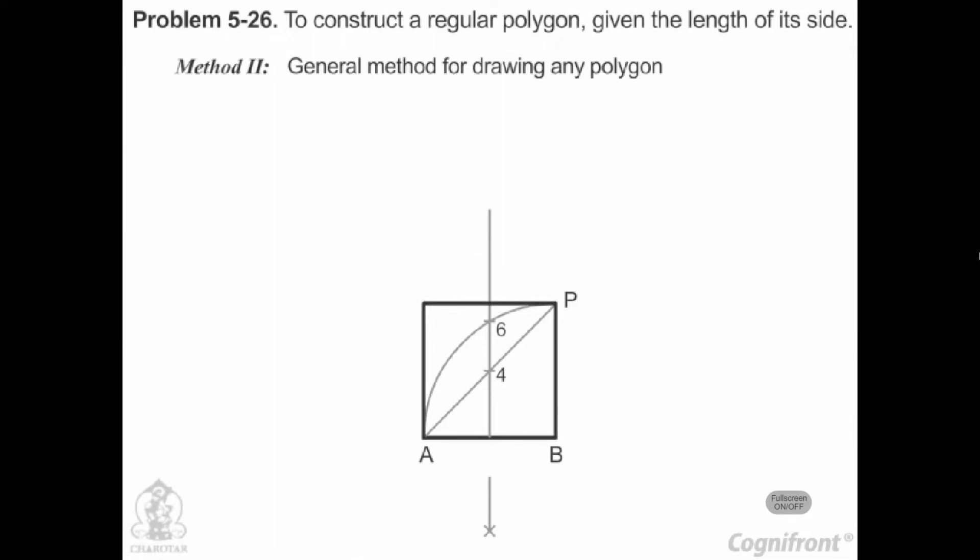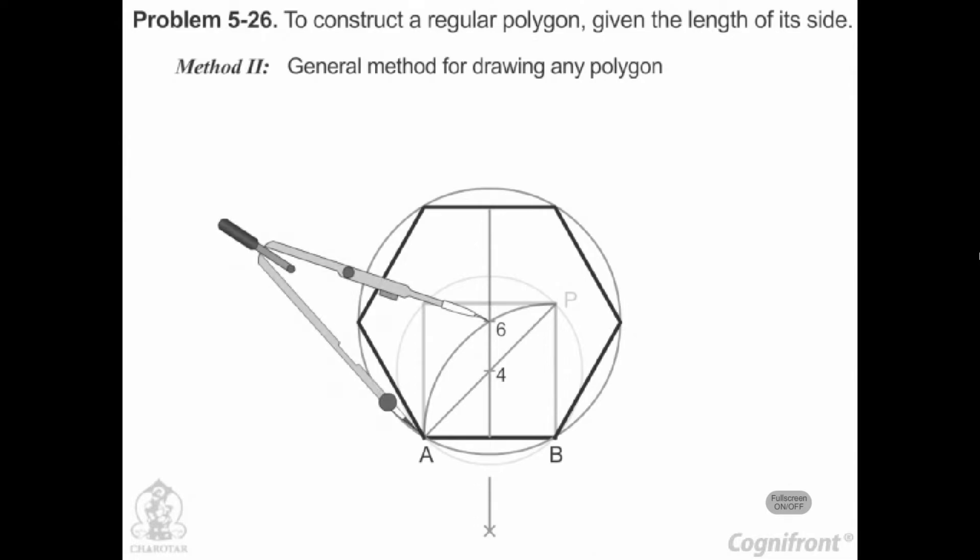A square of a side equal to AB can be inscribed in the circle drawn with center 4 and radius A4. A regular hexagon of a side equal to AB can be inscribed in the circle drawn with center 6 and radius A6.